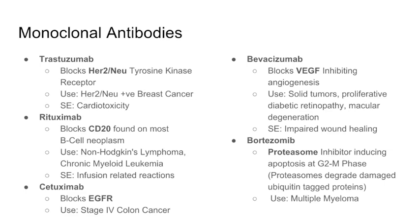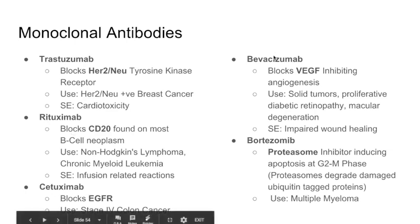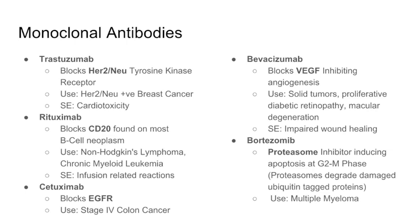Monoclonal antibodies work by identifying a signal driving cancer cell growth and blocking it with an antibody. The drugs are trastuzumab, rituximab, cetuximab, bevacizumab, and bortezomib. Trastuzumab is used for breast cancer — it blocks HER2-neu, the tyrosine kinase receptor. It's used for HER2-neu positive breast cancer, and a side effect is cardiotoxicity.